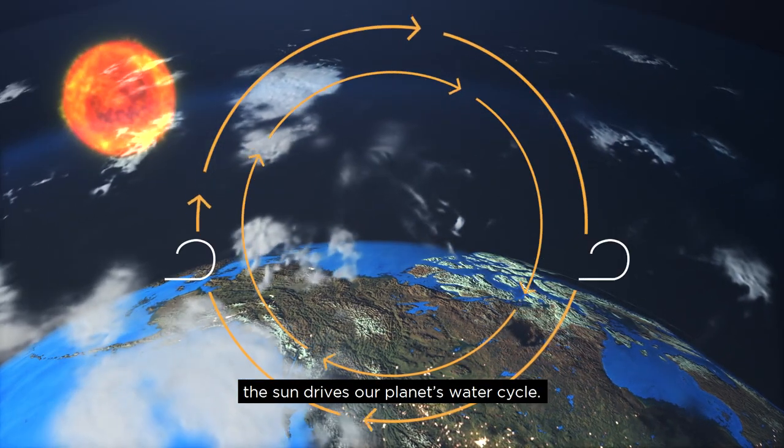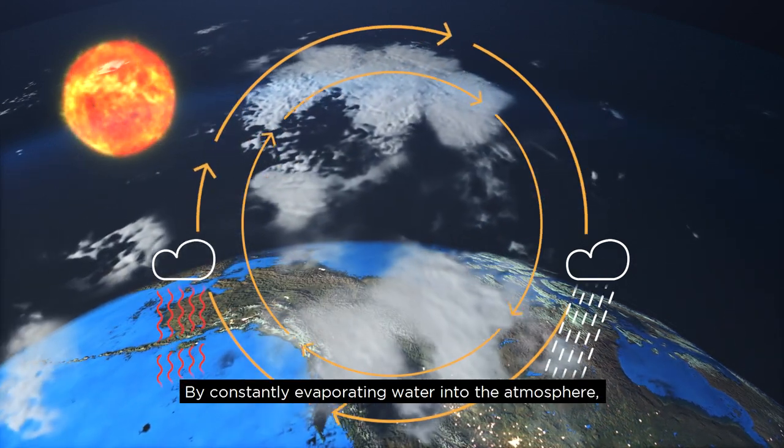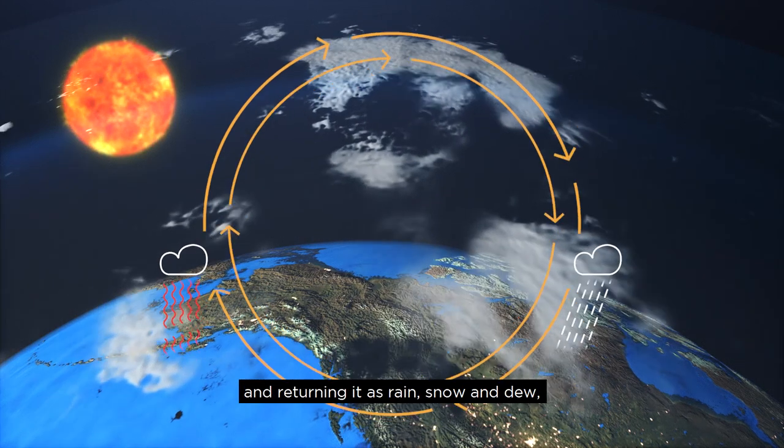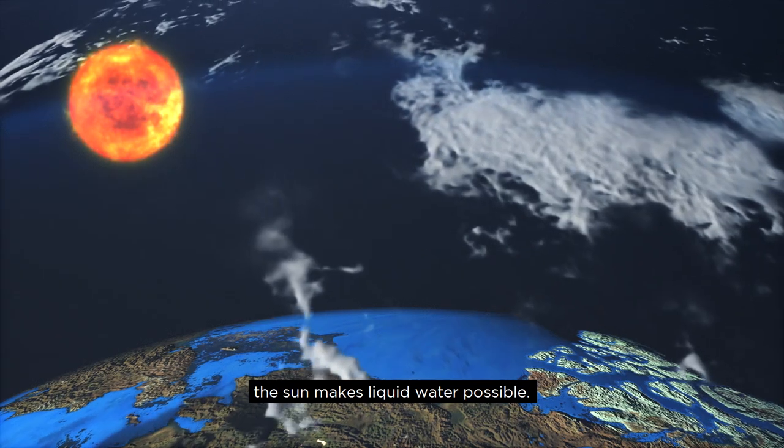As well as affecting the Earth's temperature, the sun drives our planet's water cycle. By constantly evaporating water into the atmosphere and returning it as rain, snow and dew, the sun makes liquid water possible.